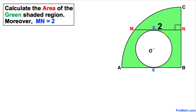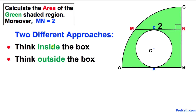Welcome to Pre-Math. In this video tutorial we have a quarter of a circle, and within that quarter circle we have a smaller circle. This smaller circle has two tangency points D and E, and MN is a tangent to this smaller circle with a value of 2. We are going to calculate the area of the green shaded region using two different methods — thinking inside the box and outside the box.